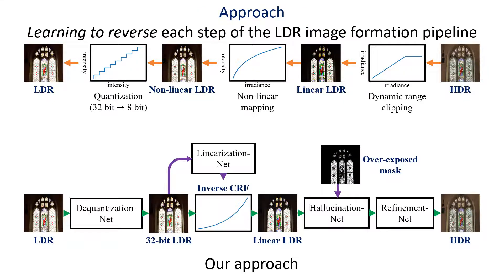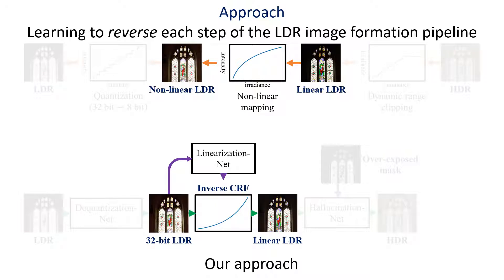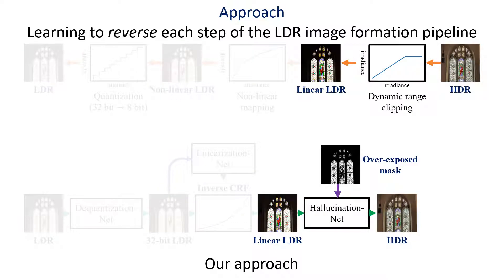We propose to decompose the problem into three subtasks and learn specialized CNNs to reverse these steps. Our model consists of a dequantization net to restore the missing details caused by quantization, a linearization net to estimate and invert the CRF and convert the nonlinear LDR image to a linear image, and a hallucination net to predict the missing content in overexposed regions.